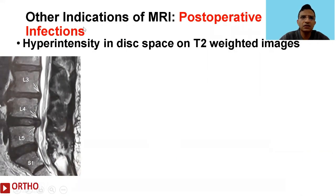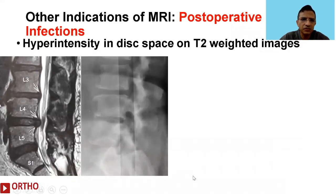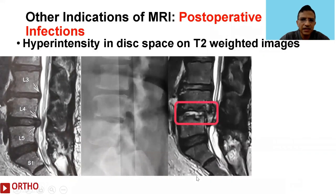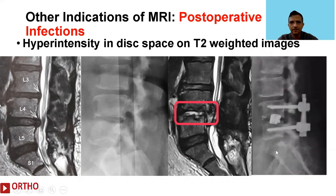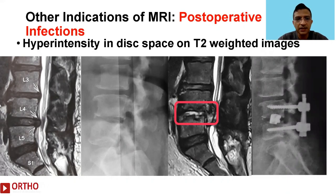MRI is also useful for evaluating post-operative spine infections, which are better assessed on T2-weighted images. Here is an illustrative case: a patient who had undergone L4-5 discectomy presented with pain thereafter. MRI showed hyperintensity on T2-weighted images at the level of the disc space, indicative of infection, and the patient had to be taken for appropriate surgery.